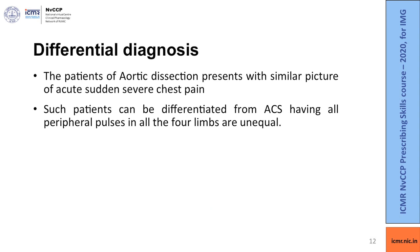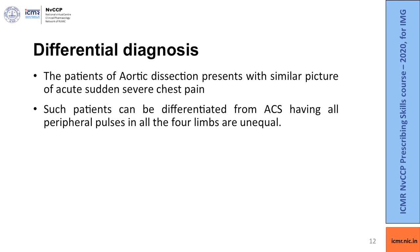One important differential to consider is aortic dissection. Aortic dissection patients present with a similar picture of acute severe sudden chest pain, but can be differentiated from acute coronary syndrome by unequal peripheral pulses in all limbs.